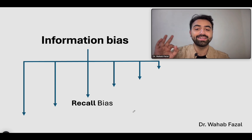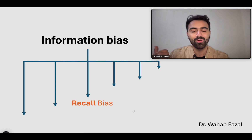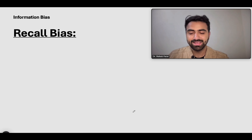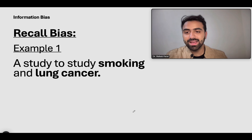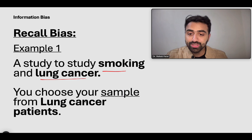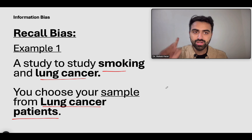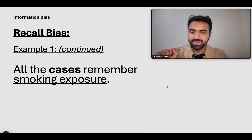The third type is recall bias — you may have heard about recall bias in previous videos on different types of studies. Let's take an example: a study is being done to compare smoking and lung cancer. You choose your sample from lung cancer patients in a case-control fashion.